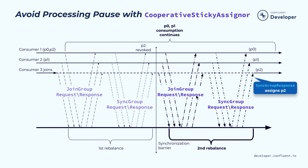In the second round of rebalance, the group coordinator, having given the chance for consumer instances to revoke the unneeded partitions, will then assign the revoked partitions to the new instance. In this case, the previously revoked partition two is reassigned to the new consumer. As you can see, in the whole process, the processing for partition zero and partition one never stopped — it's actually a big improvement from the previous case.